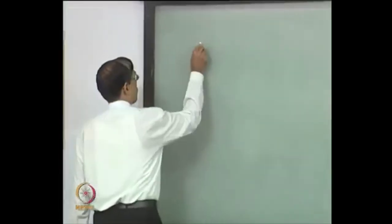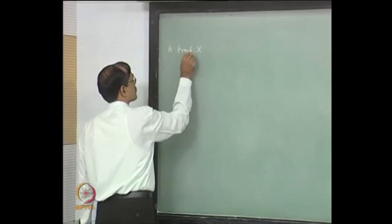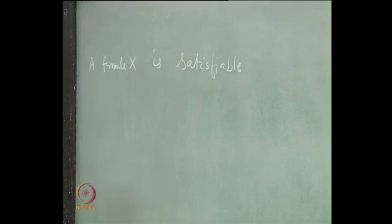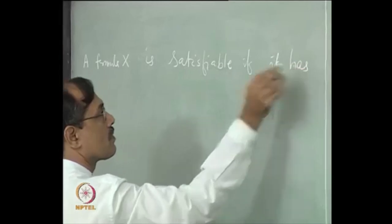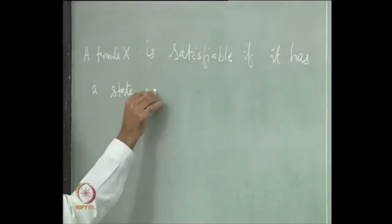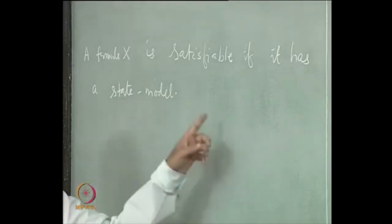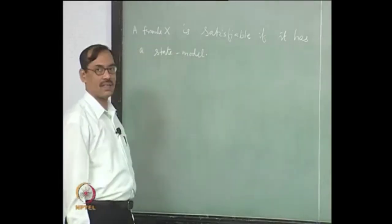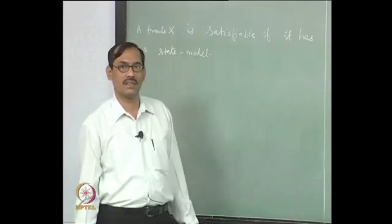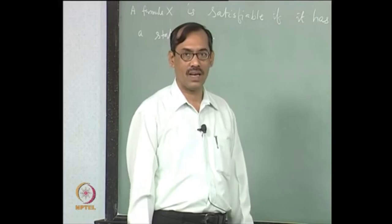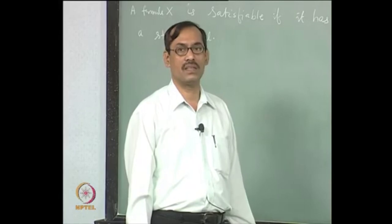We say that a formula x is satisfiable if it has a state model. This means it will be called satisfiable if there exists one interpretation i and there exists a valuation l under i such that the state i,l satisfies the formula x. That is what we mean by saying it has a state model. Otherwise, we say the formula is unsatisfiable — meaning you take any interpretation with whatever domain, whatever map phi, and take any valuation under that interpretation, then the ensuing state i,l will falsify it. Only in that case will we say the formula x is unsatisfiable.